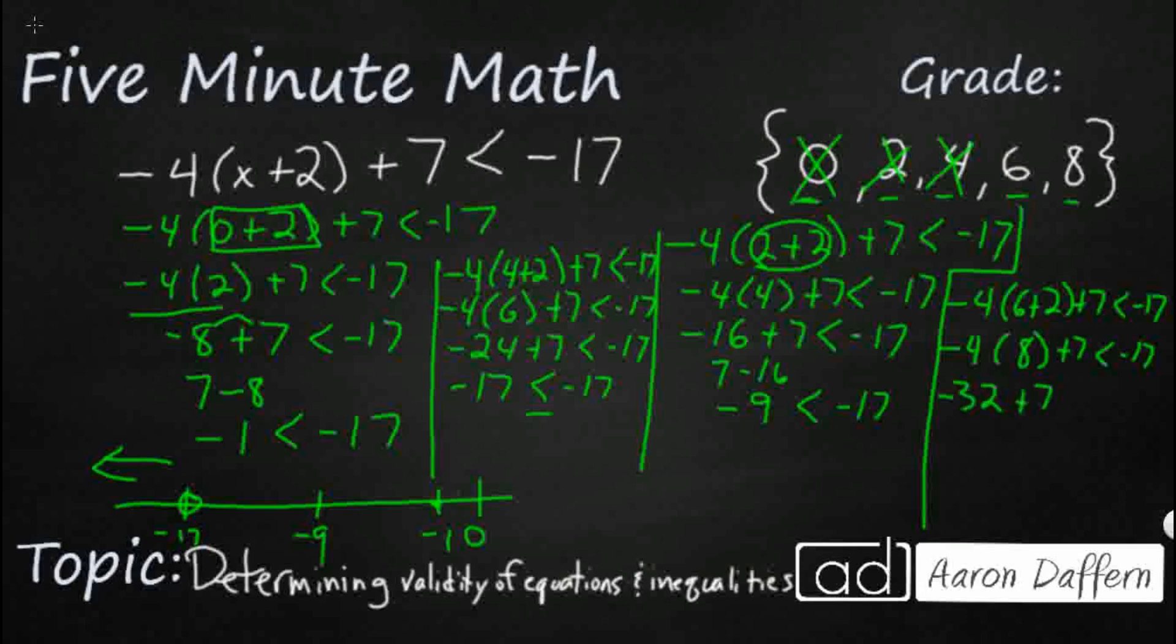So negative 32 plus 7, that's going to be negative 25 is less than negative 17. So take a look. I'm going to need to extend this out here. I finally have one that works, negative 25. And so this does work, right? So if you were to extend this, you can say 8 works as well.